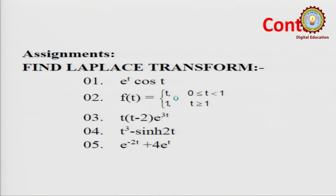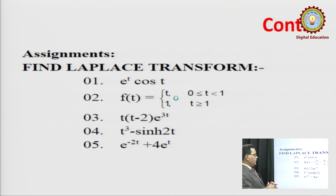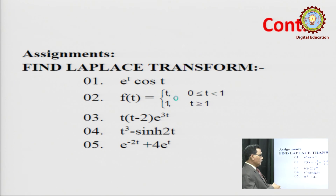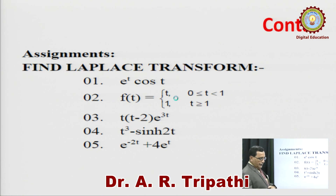For assignment, the following problems are given regarding both topics t·f(t) and f(t)/t: (1) e^t·cos t, where f(t) = t for 0 ≤ t ≤ 1 and f(t) = 1 for t > 1 — use the basic definition of Laplace transform. (3) t·(t-2)·e^(-3t) — use the shifting property. (4) t·cosh(2t). (5) e^(-2t) + 4e^t — evaluate using the properties covered in this exercise.